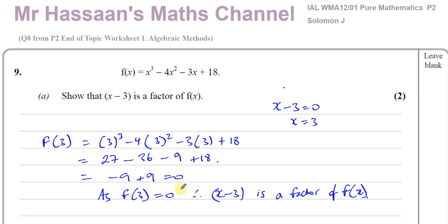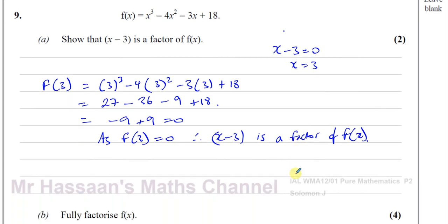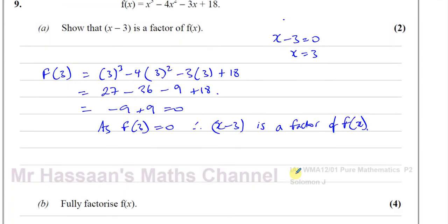Don't just leave it at equals zero without making a qualifying statement. When it says 'show that' or 'prove that', you should always make some qualifying statement at the end. That completes part A.